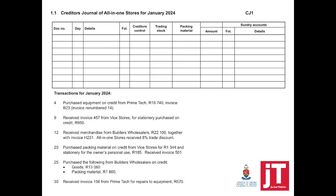Starting with day four: purchase equipment on credit from Prime Tech, 16,740, invoice B23. It says the invoice is renumbered as number 14. As a business — All-in-One Stores — we buy from different suppliers at different times, so the source documents will never be the same sequence. That's why they specifically said the invoice is renumbered, and we know that number 14 refers to the original invoice B23 received from Prime Tech.